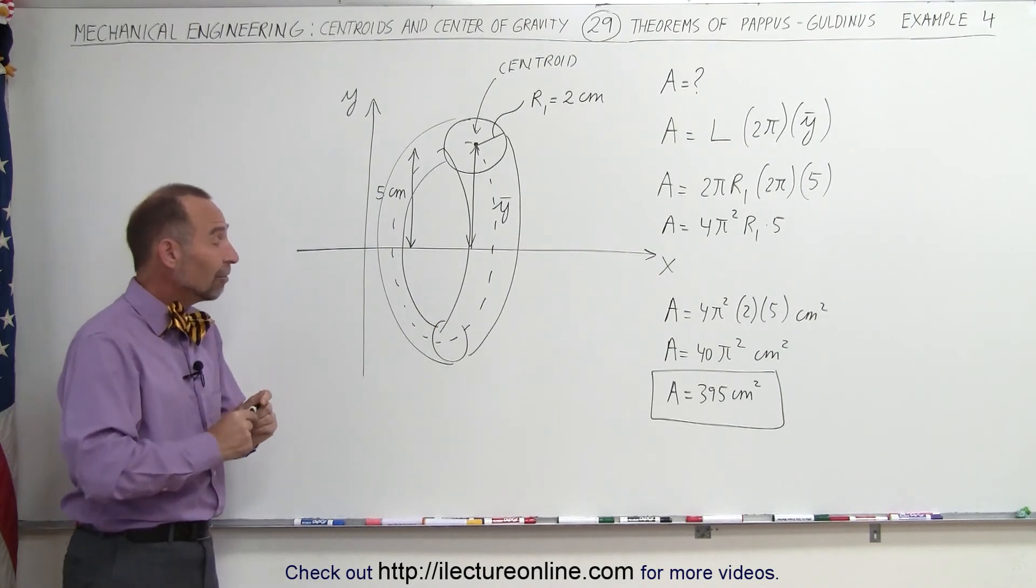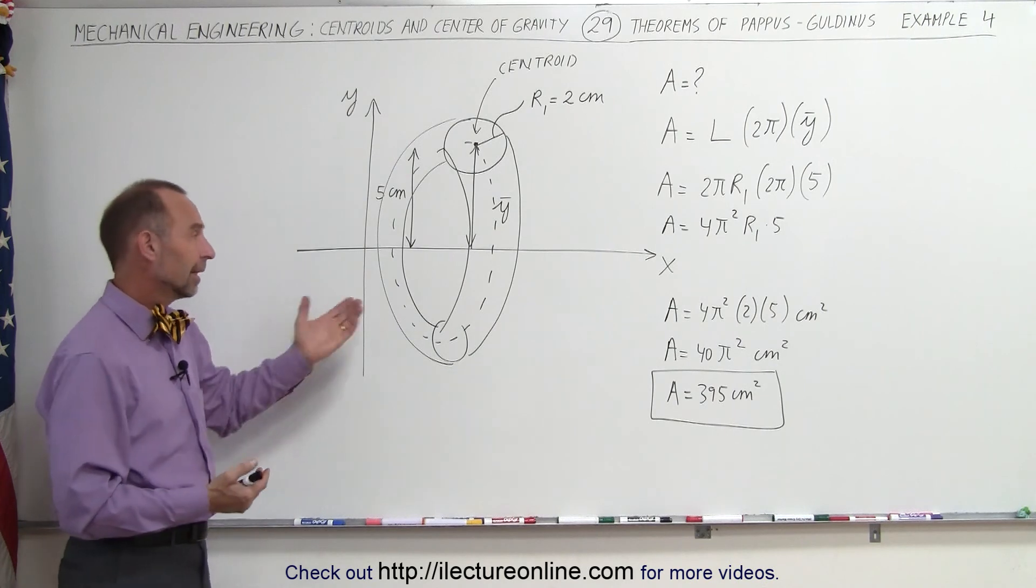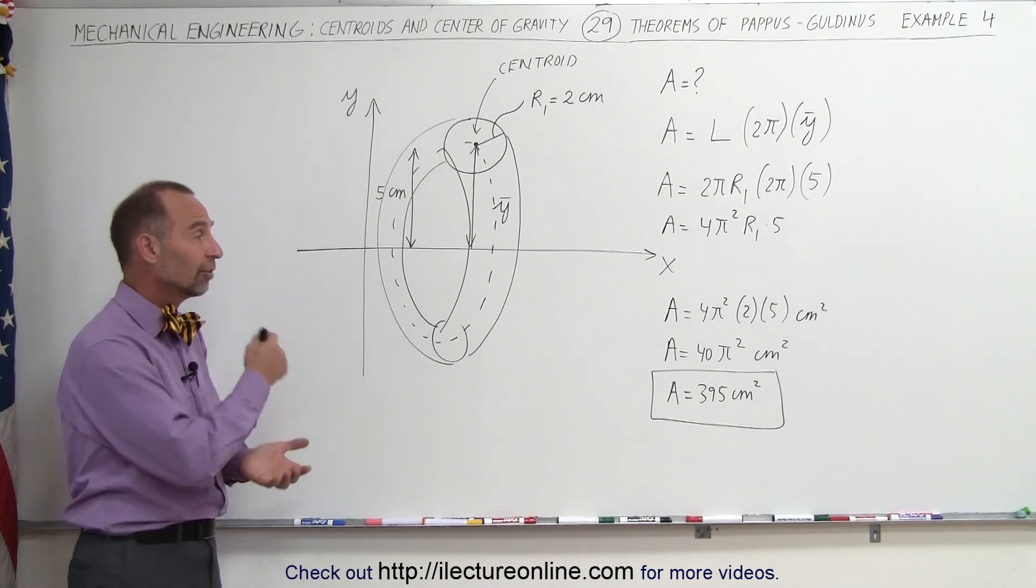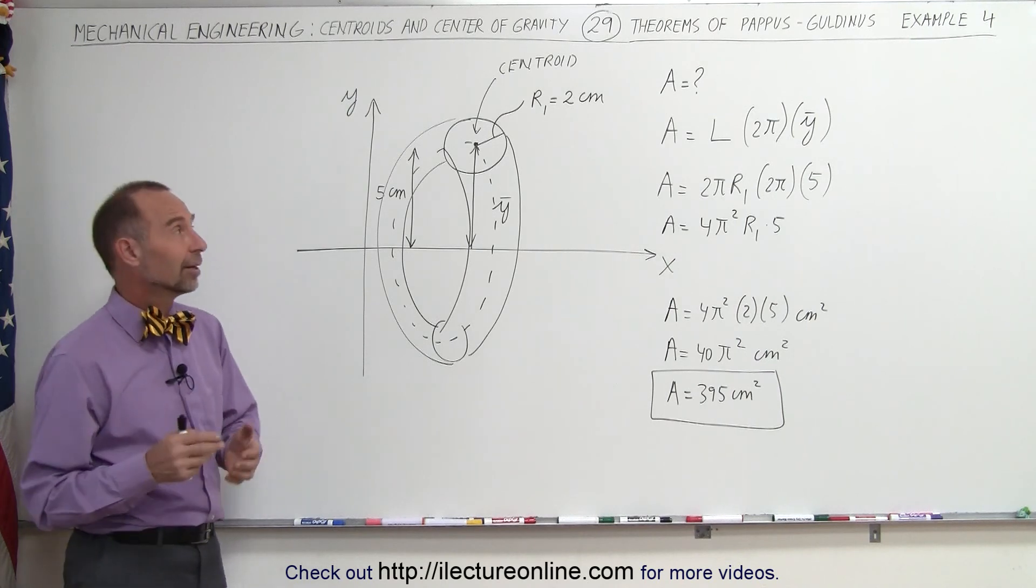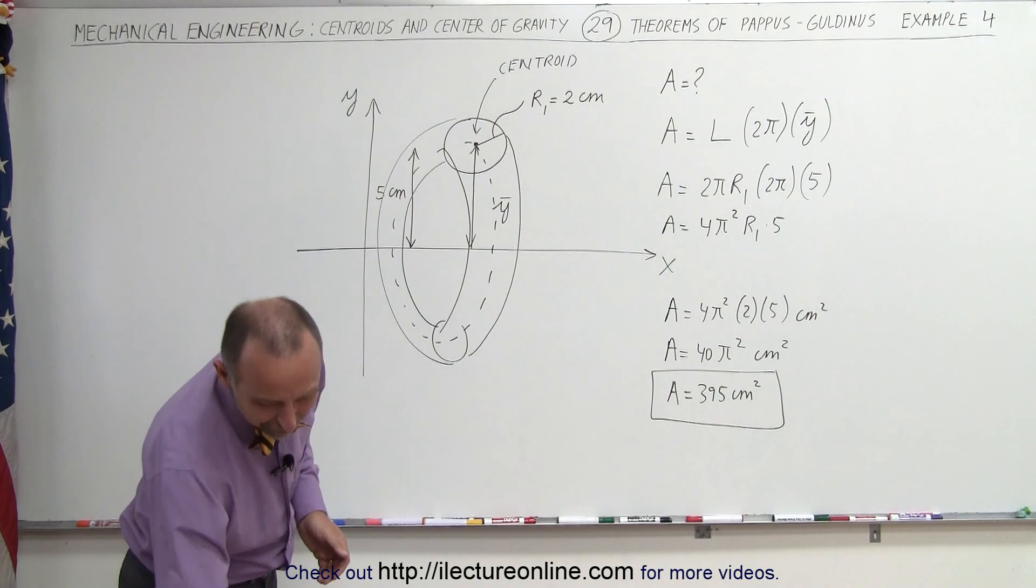And a very easy way to find the surface area of a centroid. How else would you do it? This is the easy way to do it. Again, very clever, very quick, very simplistic. That's how we use the theorem of Pappus-Guldinus. Thank you.